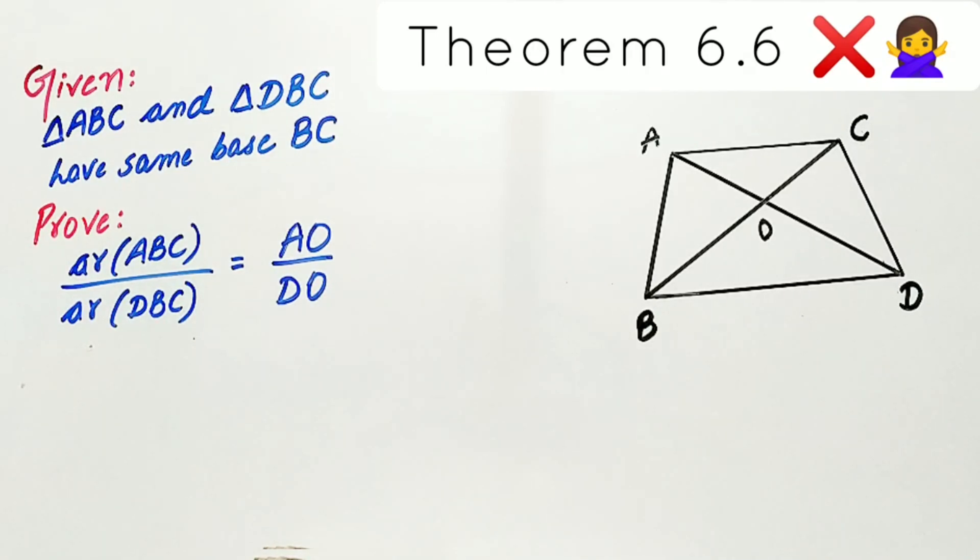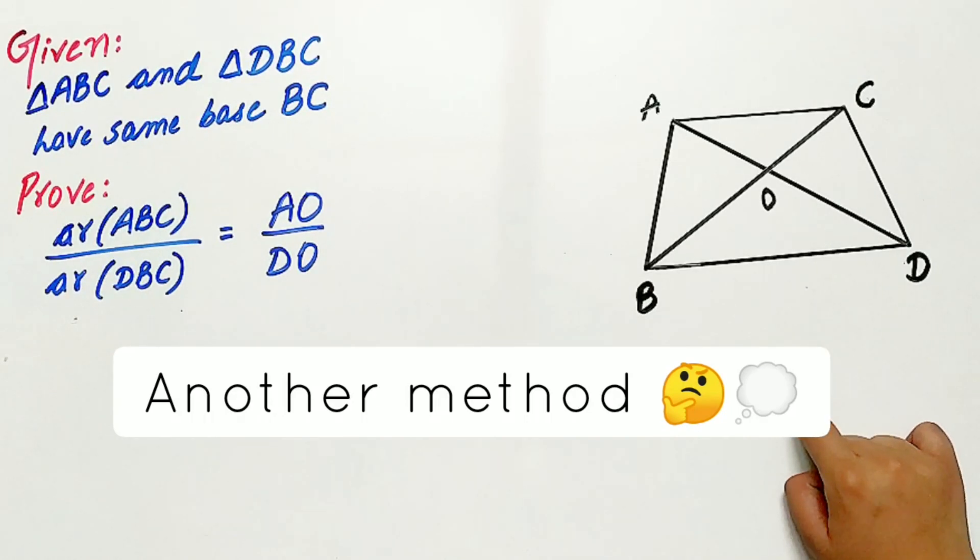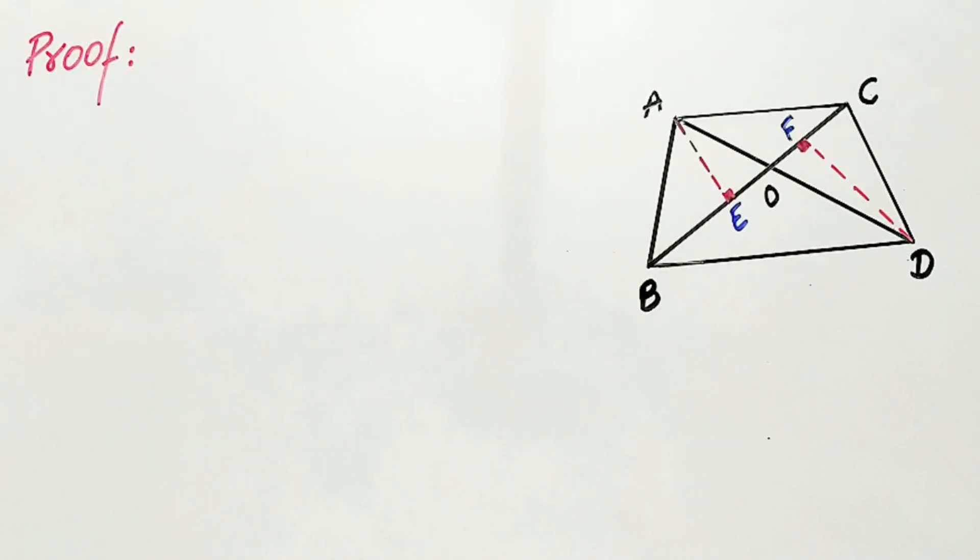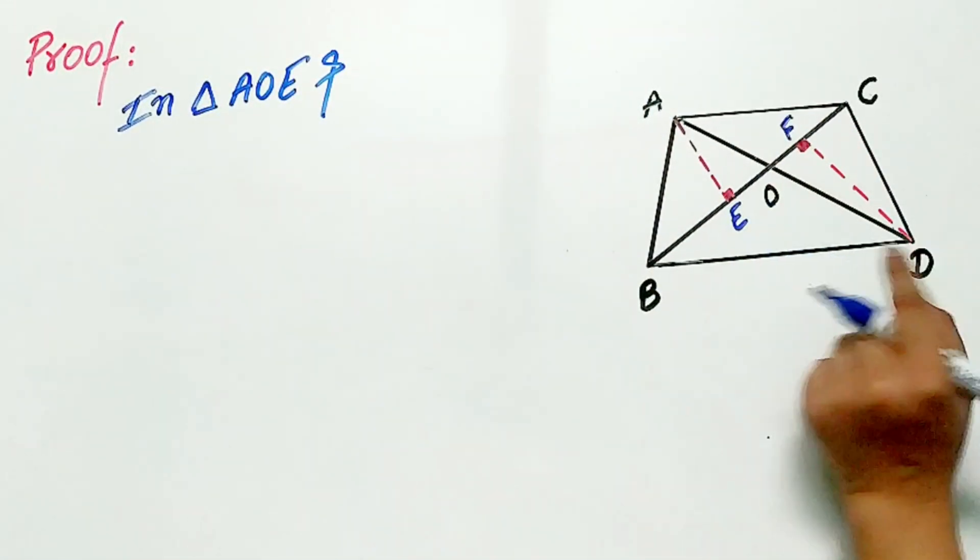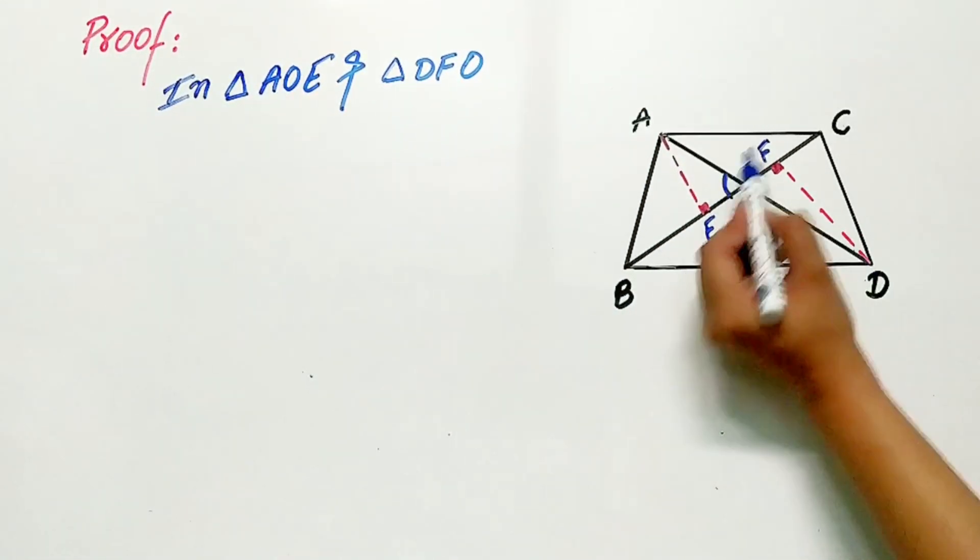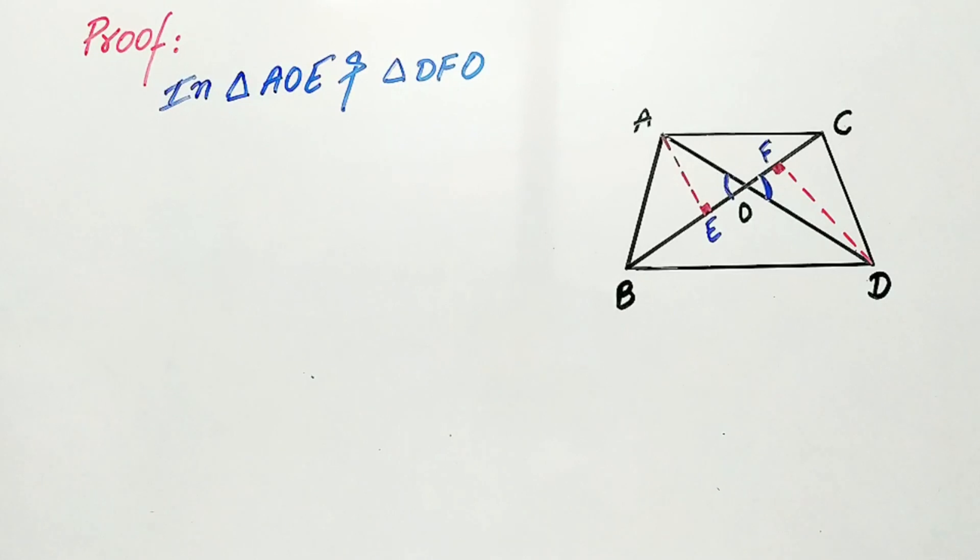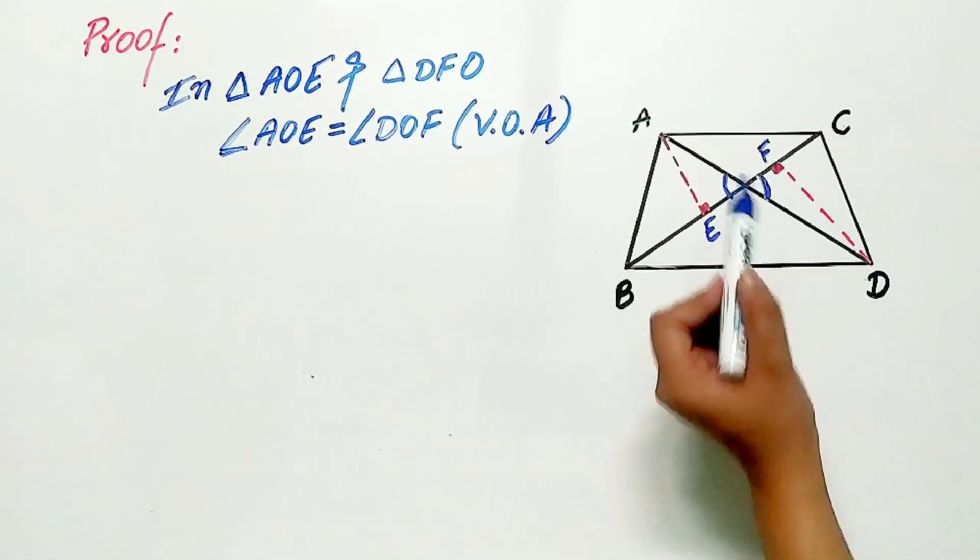We will use another approach to solve the problem. Now, step number one: In triangle AOE and triangle DFO, angle AOE is equal to angle DOF. Why? Vertically opposite angles. And angle AOE is equal to angle DFO, 90 degrees.